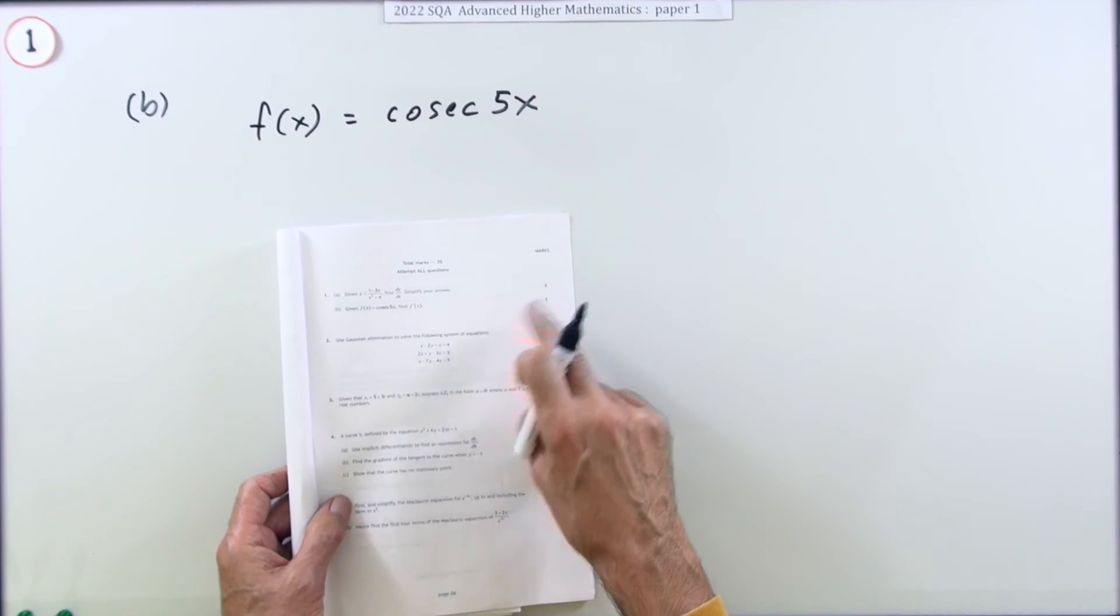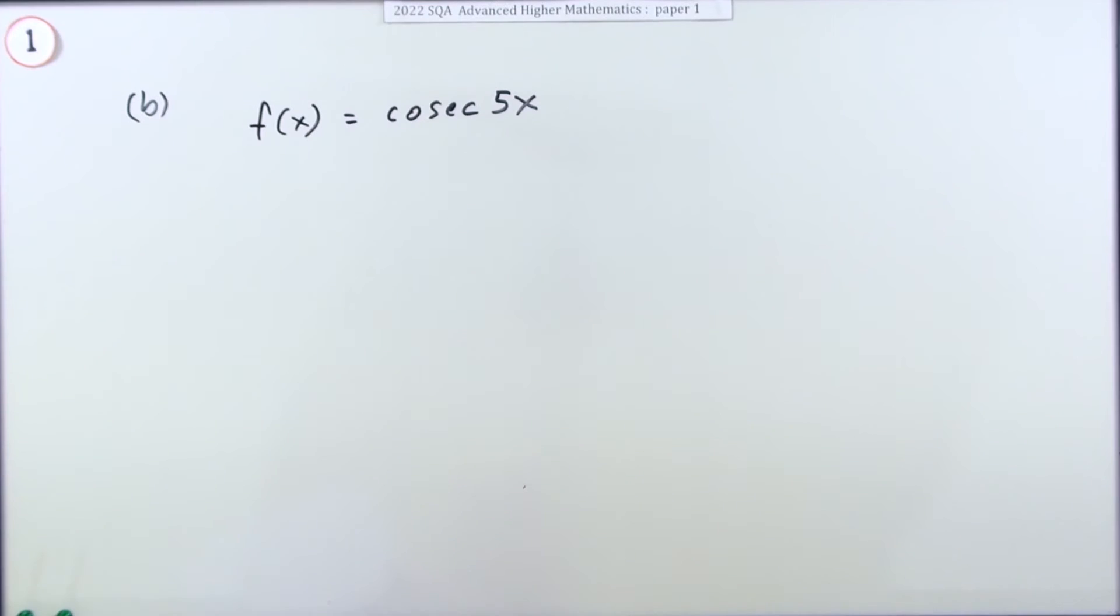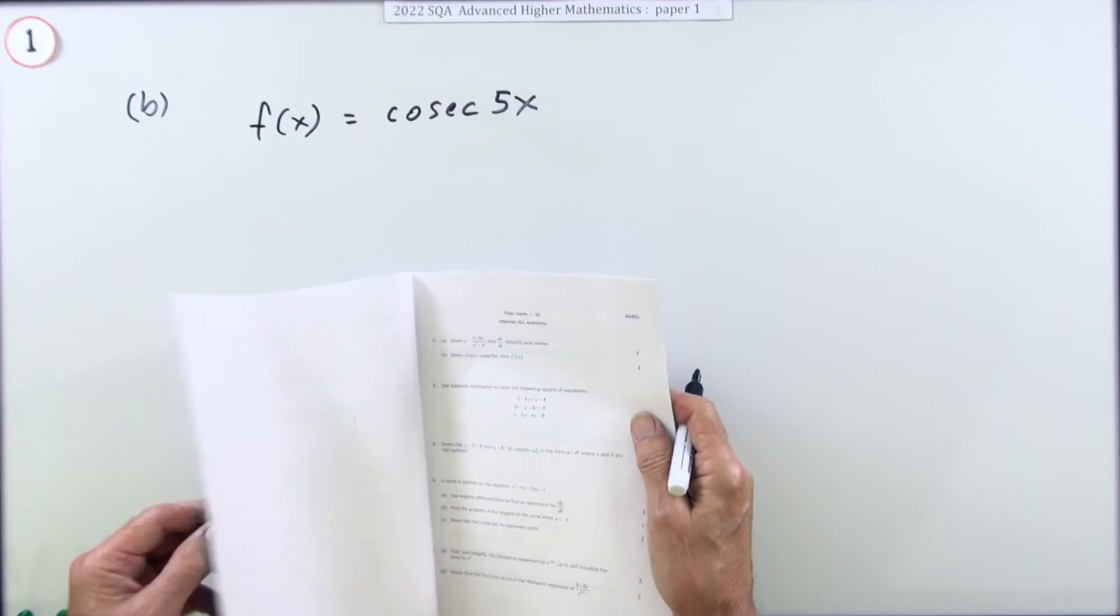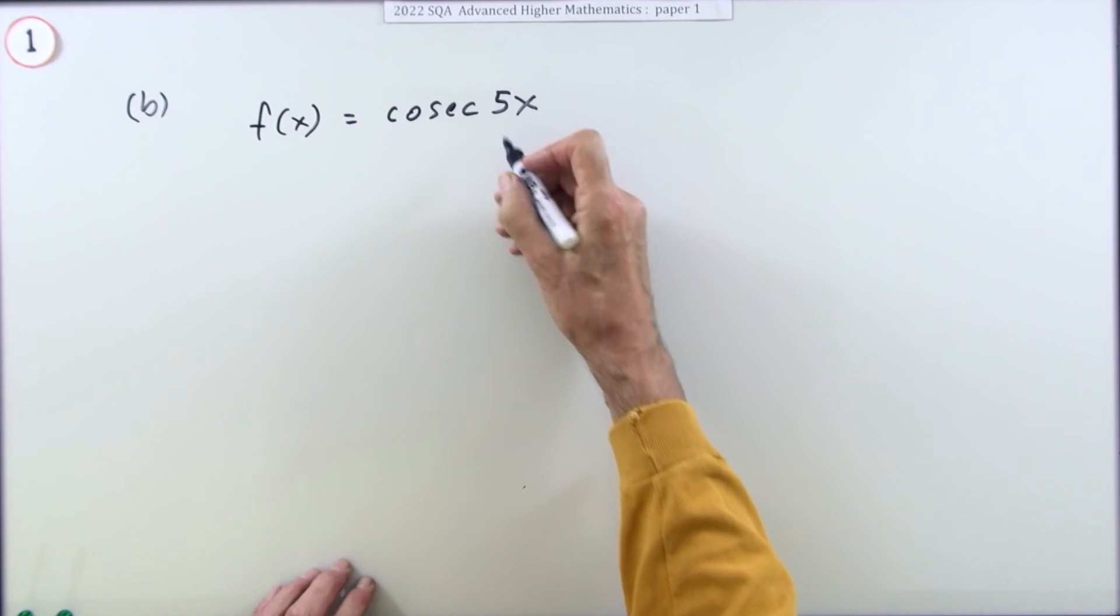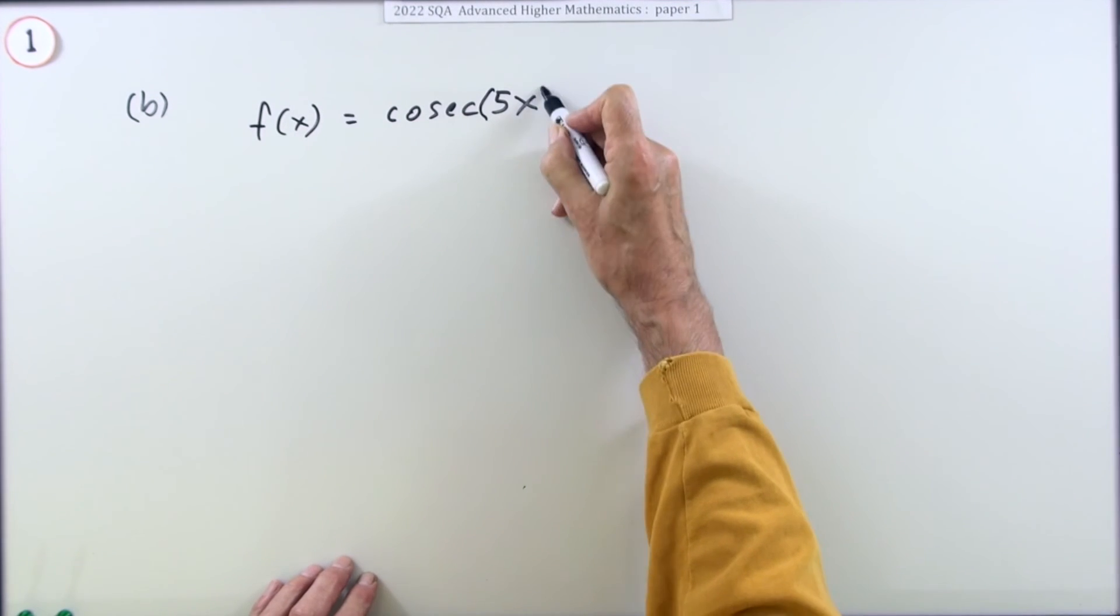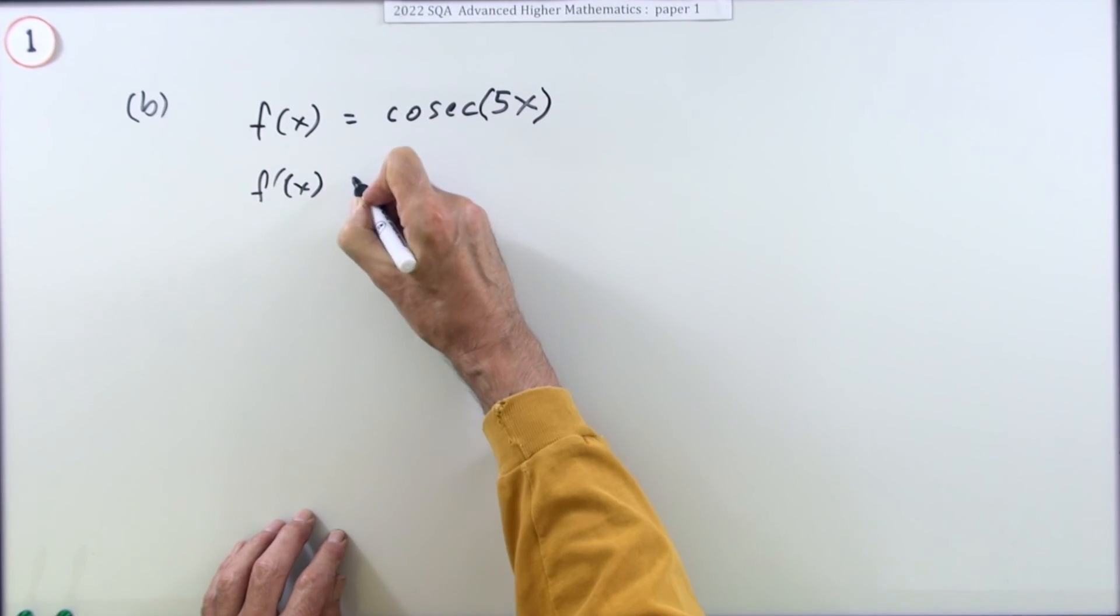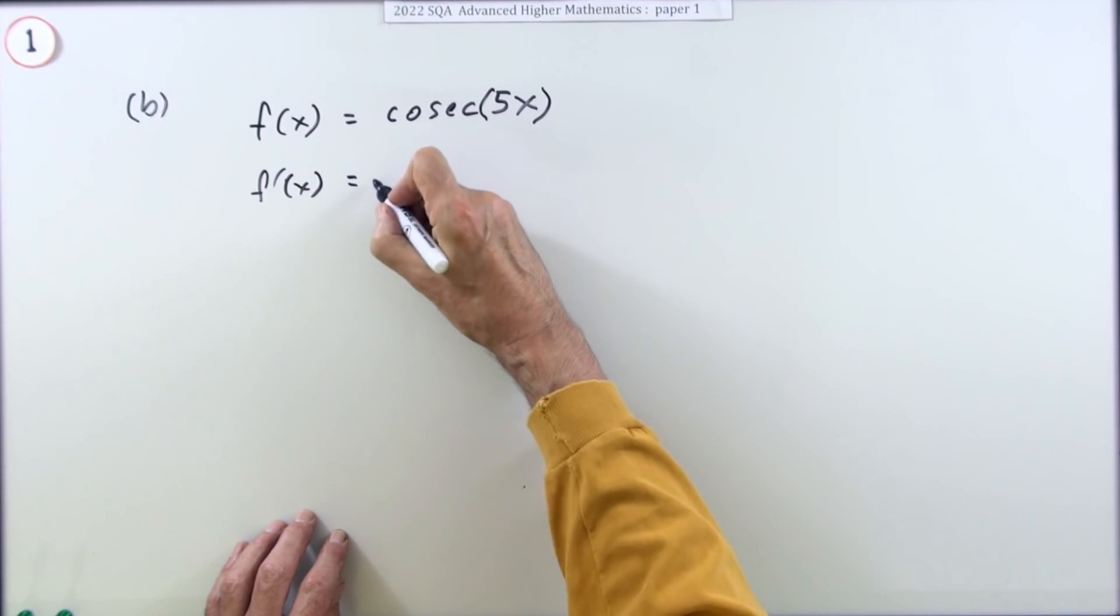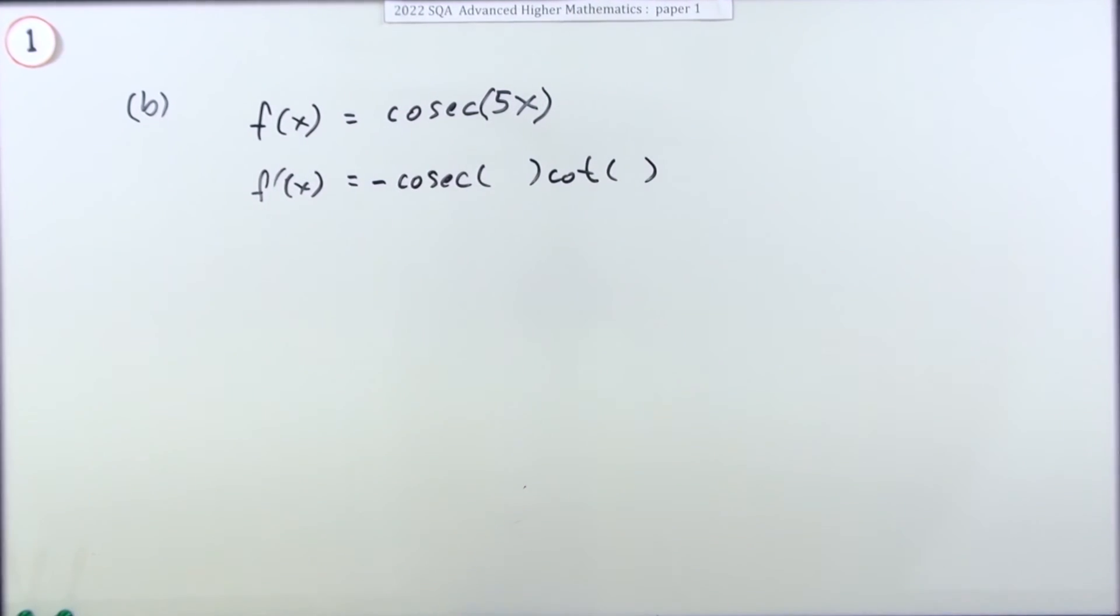So part b then for two marks. Given f(x) is cosec(5x), find f'(x). Well cosec x, if you don't remember how to differentiate that, which you should, you can look up the front, it's in there. One thing I will do is emphasize the fact that this is a function of a function, so you'll be using the chain rule by putting that in a wee bracket.